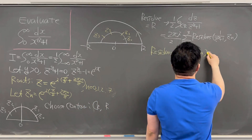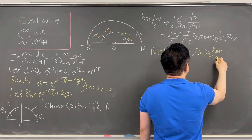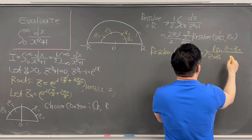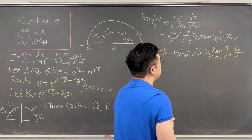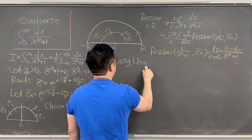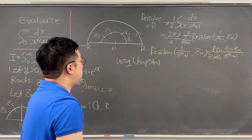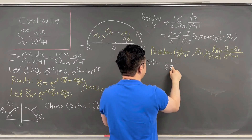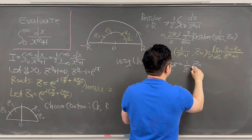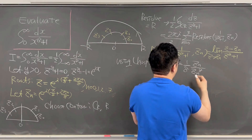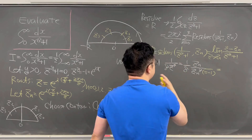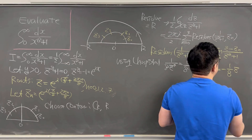This residue equals the limit as z goes to z_n of (z − z_n)/(z⁸+1). Using L'Hôpital's rule, this becomes 1/(8z⁷), evaluated at z_n, which equals 1/(8·z_n⁷). Since z_n⁸ equals negative 1, the denominator gives negative 1, so the residue simplifies to −1/(8·z_n).